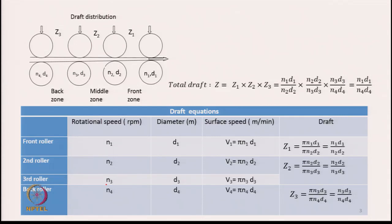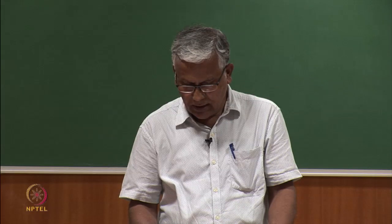If you know the diameter and the rotational speed, you can find out the corresponding surface speeds. The draft between the front and second roller, Z1, is the ratio of surface speeds: π·n1·d1 divided by π·n2·d2, which simplifies to n1·d1 / n2·d2. Similarly, Z2 = n2·d2 / n3·d3, and Z3 = n3·d3 / n4·d4. To find the draft we need to know the speeds and diameters of the rollers.